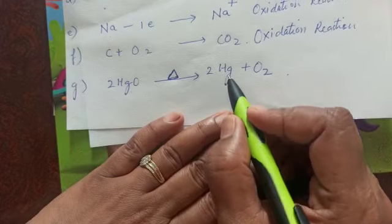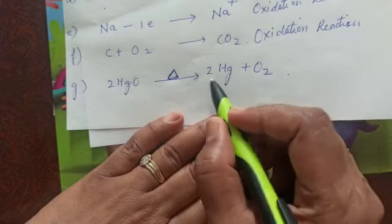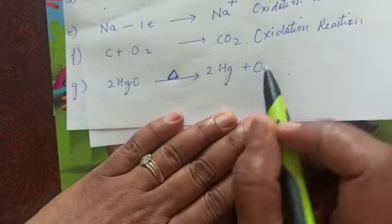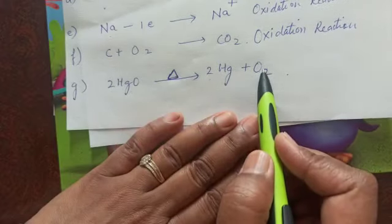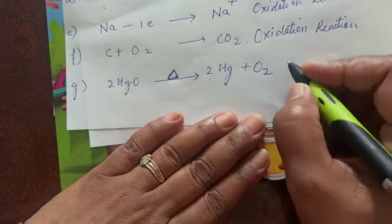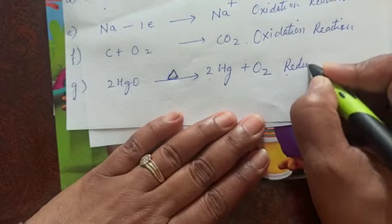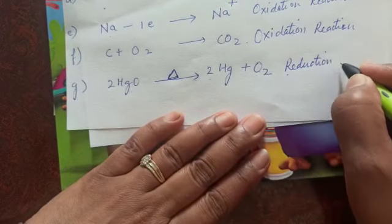Metal mercury and oxygen is formed. So here again the compound is losing oxygen. So loss of oxygen is reduction reaction. So this last one is reduction reaction.